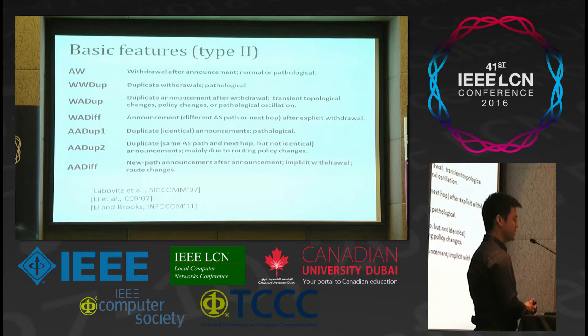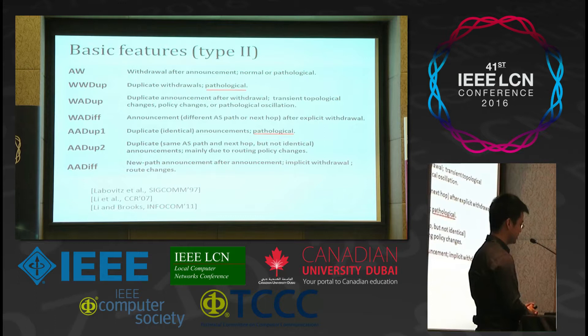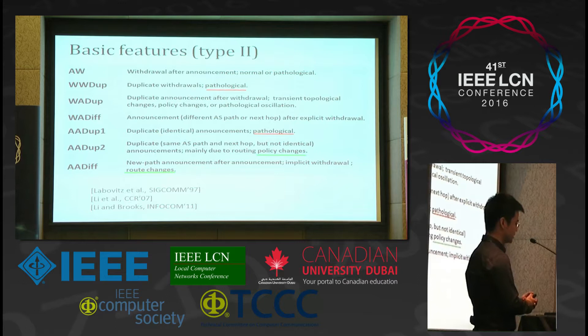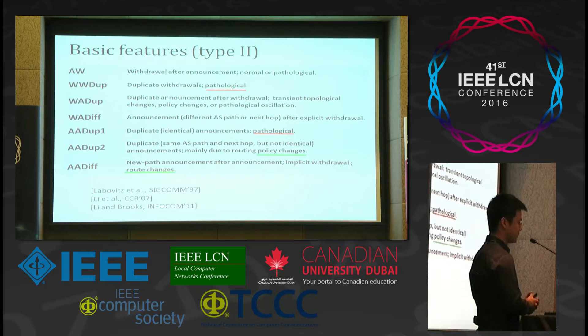Similarly, we can define seven basic features, some of which are pathological. For example, ADUP1 is duplicate and identical announcements, and WWDUP is duplicate withdrawals, which is also pathological. We can also see policy changes: for example, ADUP2 is duplicate announcements with the same AS path and next hop but not identical, for example with different BGP communities. And AADIF is route changes. We can also see other three types: AW is withdrawal after announcement, which could be normal or pathological; and WADIF is announcement after explicit withdrawal.